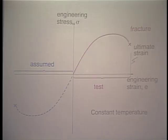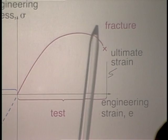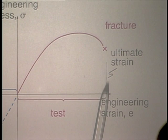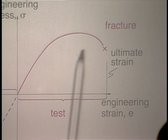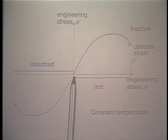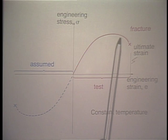Looking at schematic test results: engineering stress is plotted vertically and engineering strain horizontally, with the results shown in red — fracture occurring at an ultimate strain. The test is performed in the tensile region, but for analysis we also apply the constitutive relation in compression, assuming the same behavior — reflecting the curve into the compressive region, shown by the dashed blue line. These results are obtained at constant temperature.